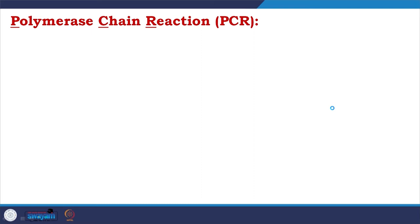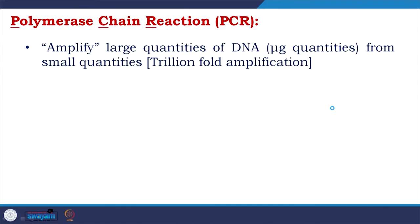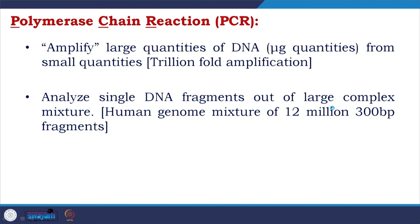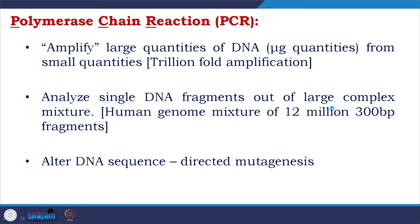Before getting to sequencing, let me talk about polymerase chain reaction — PCR. Based on the observed DNA replication process, a method called PCR — polymerase chain reaction — was developed by Kary Mullis, who received the Nobel Prize for it. PCR amplifies large quantities of DNA, at the level of micrograms to milligrams, from small quantities — generally there is a trillion-fold amplification. You can analyze a single DNA fragment out of a large complex mixture like a human genome with 12,300,000 base pair fragments. You can also identify or perform mutagenesis using PCR.